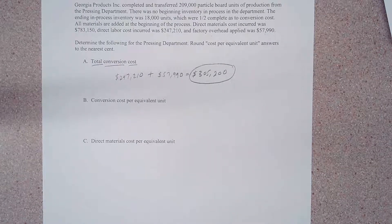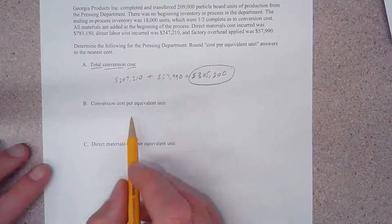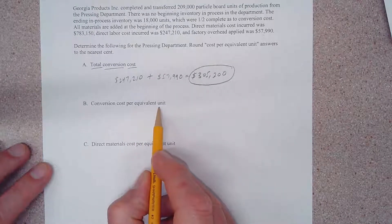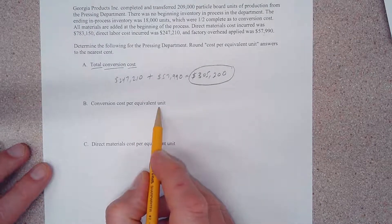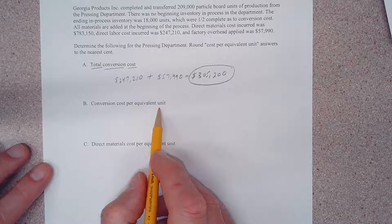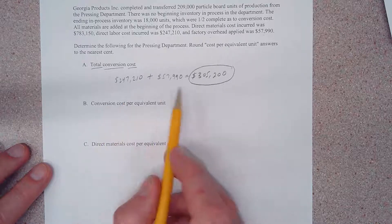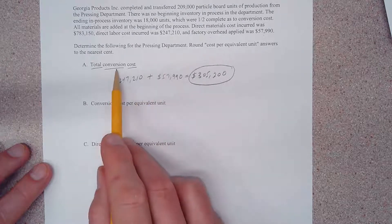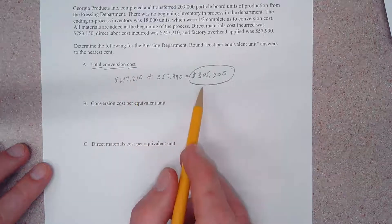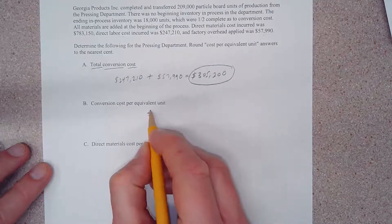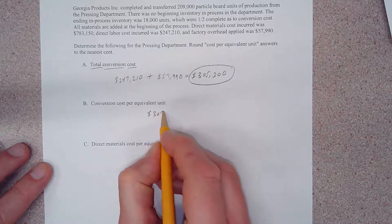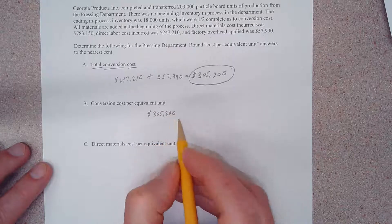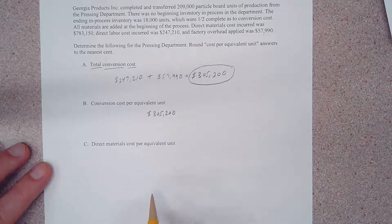So when we look at our conversion cost per equivalent unit, I can tell you right now that the numbers we're going to need for conversion cost is this number right here we just calculated—total conversion cost. Now we're going to use it just like so, and this is going to be a part of a fraction.